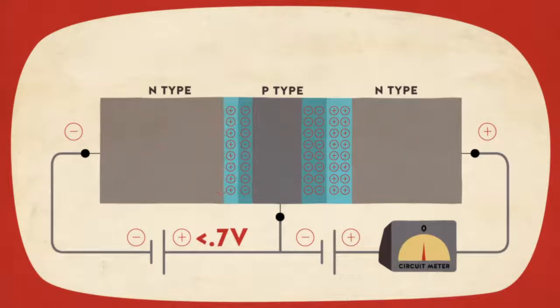Otherwise, it remains switched off. In this way, small variations in the input voltage can be used to quickly switch between high and low output currents.